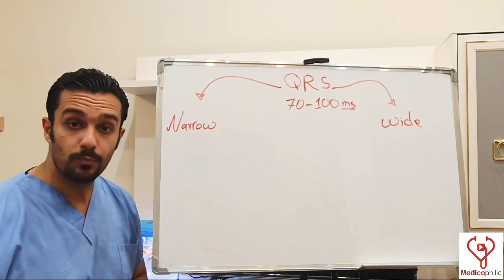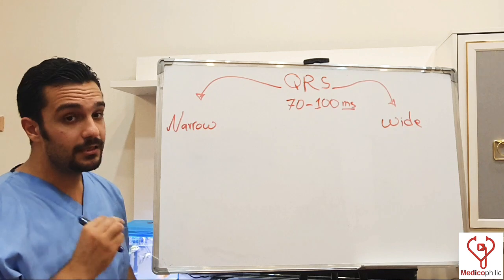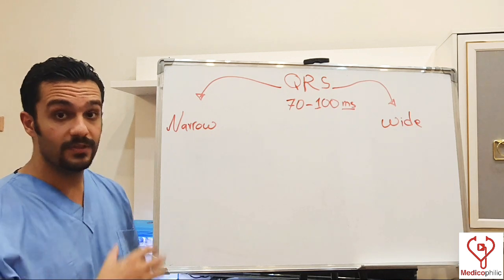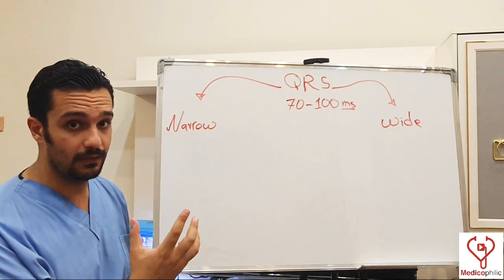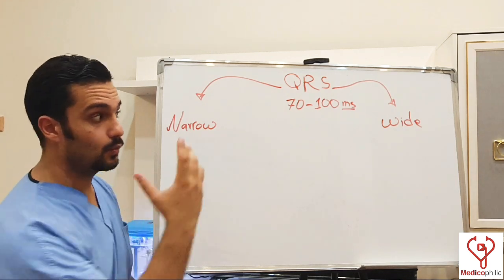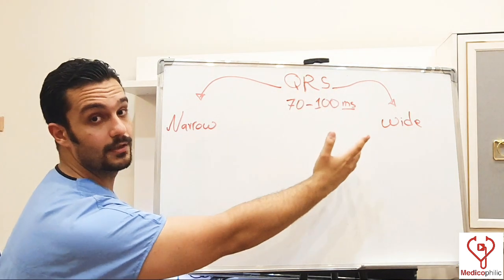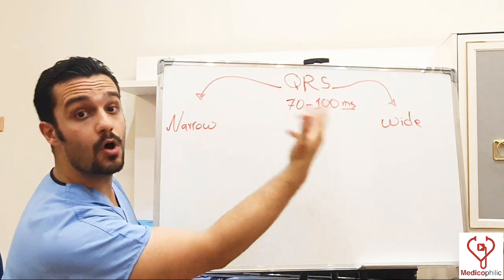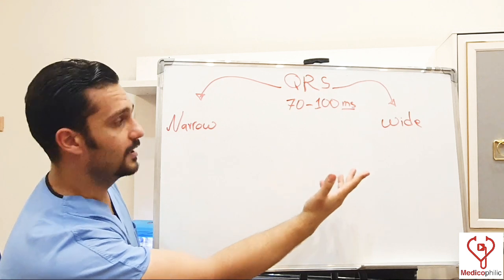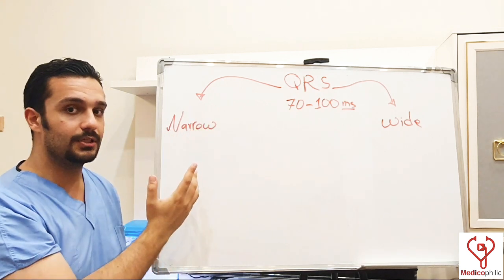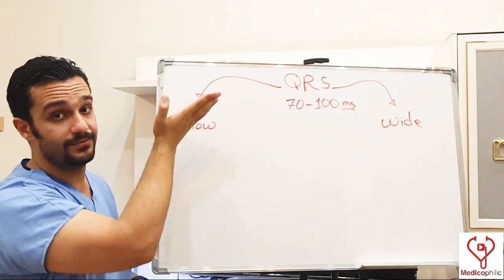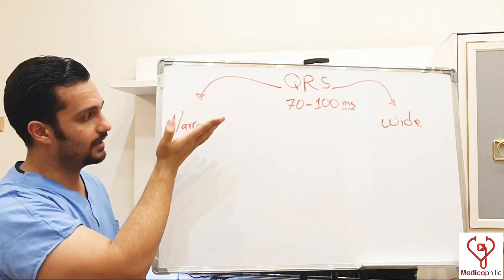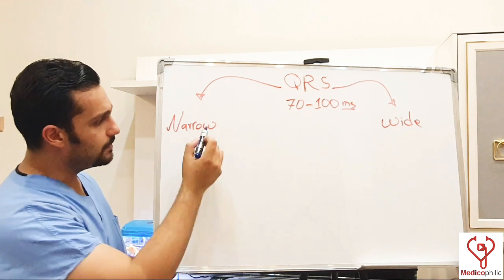An important note: any signal coming from the ventricle itself gives us a wide or broad QRS complex, and any signal coming from above the ventricle gives us a narrow QRS complex.